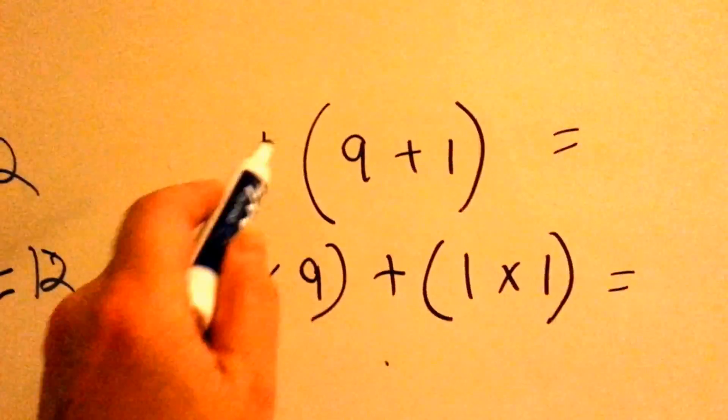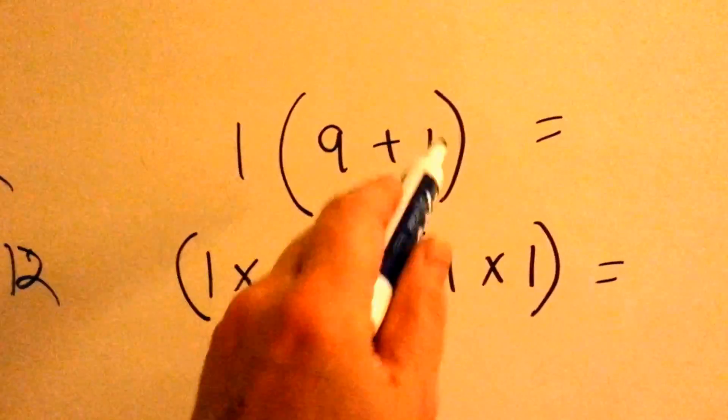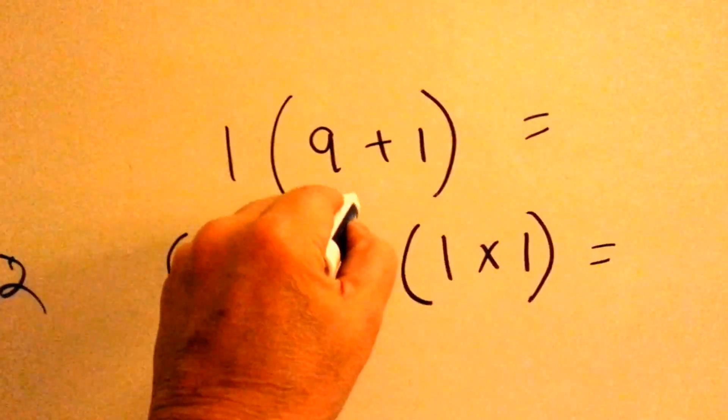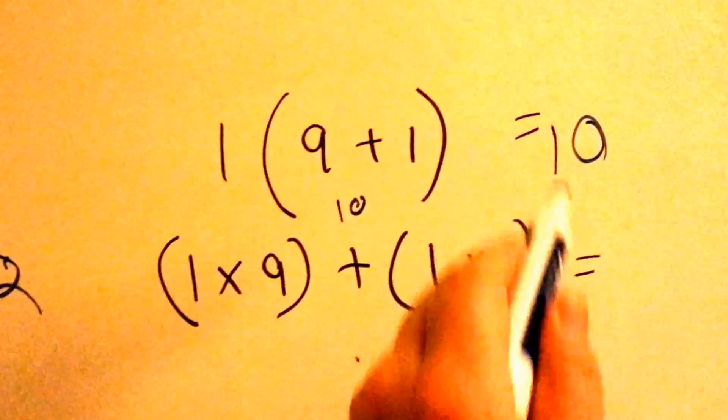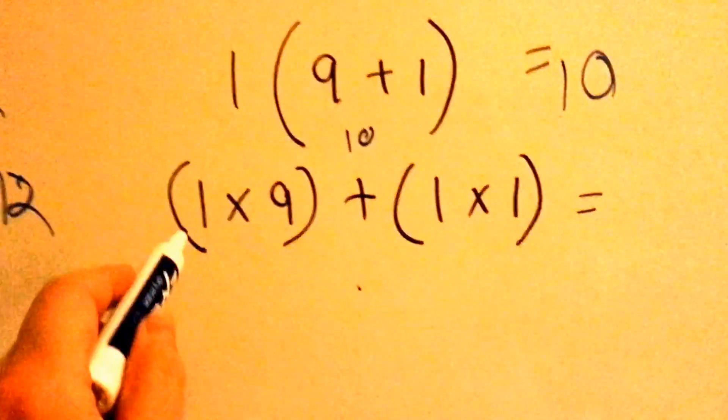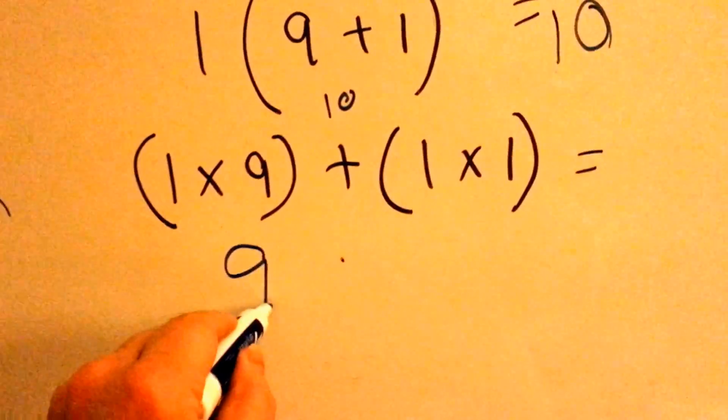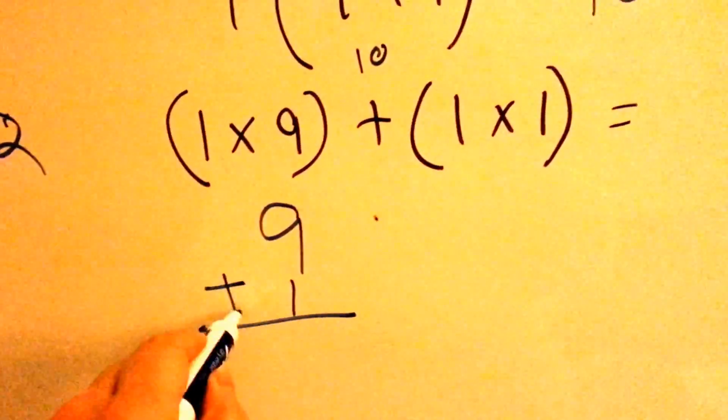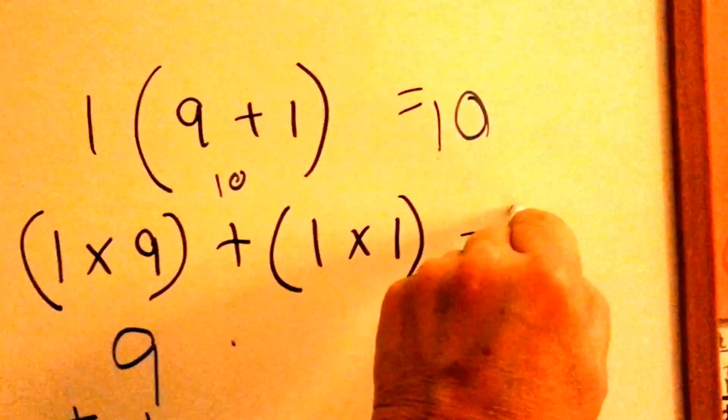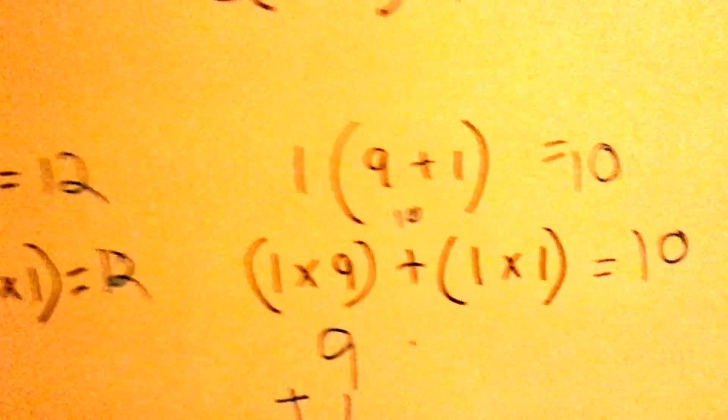Here's our last one. 1 times 9 plus 1. 9 plus 1 is 10. 1 times 10 is 10. 1 times any number is that number. Try it this way. 1 times 9 is 9. 1 times 1 is 1. 9 plus 1 is 10. 10. So, that's the distributive property.